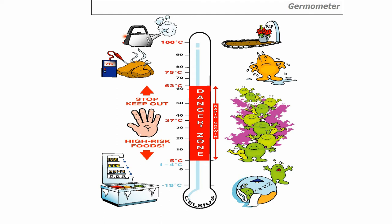The temperature we are advised by the Food Standards Agency to cook food to is 75 degrees C. For this course and exam, that is the cooking temperature. However, if you cook food to 63 degrees C all bacteria are killed, and you'll get a more succulent result at a lesser temperature than 75.